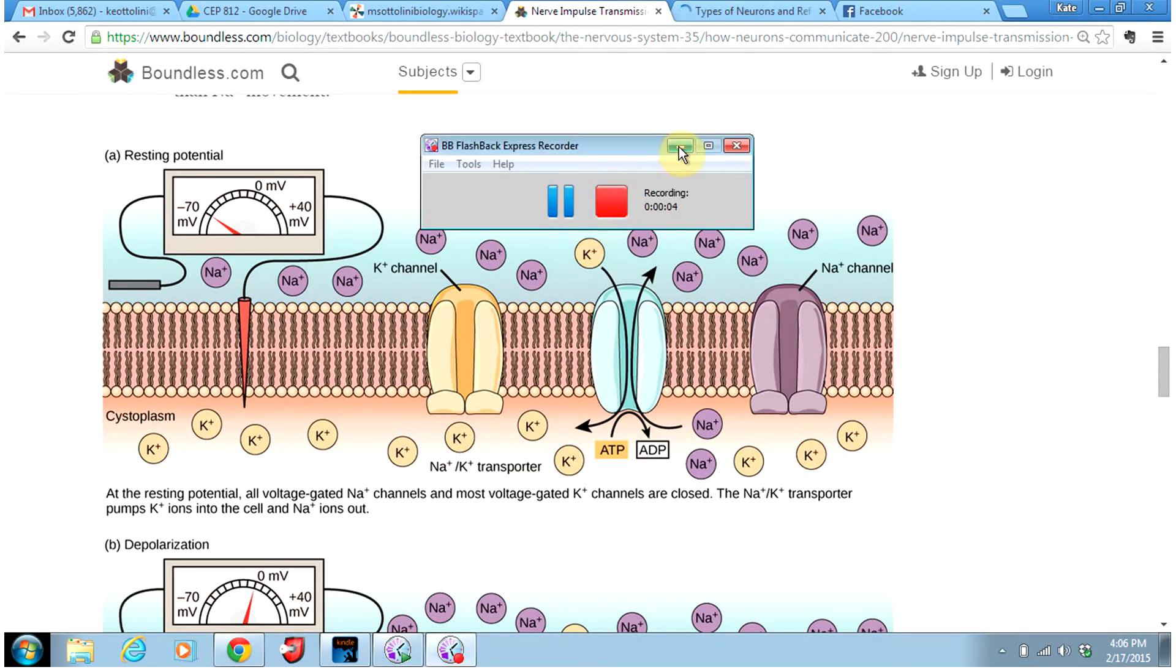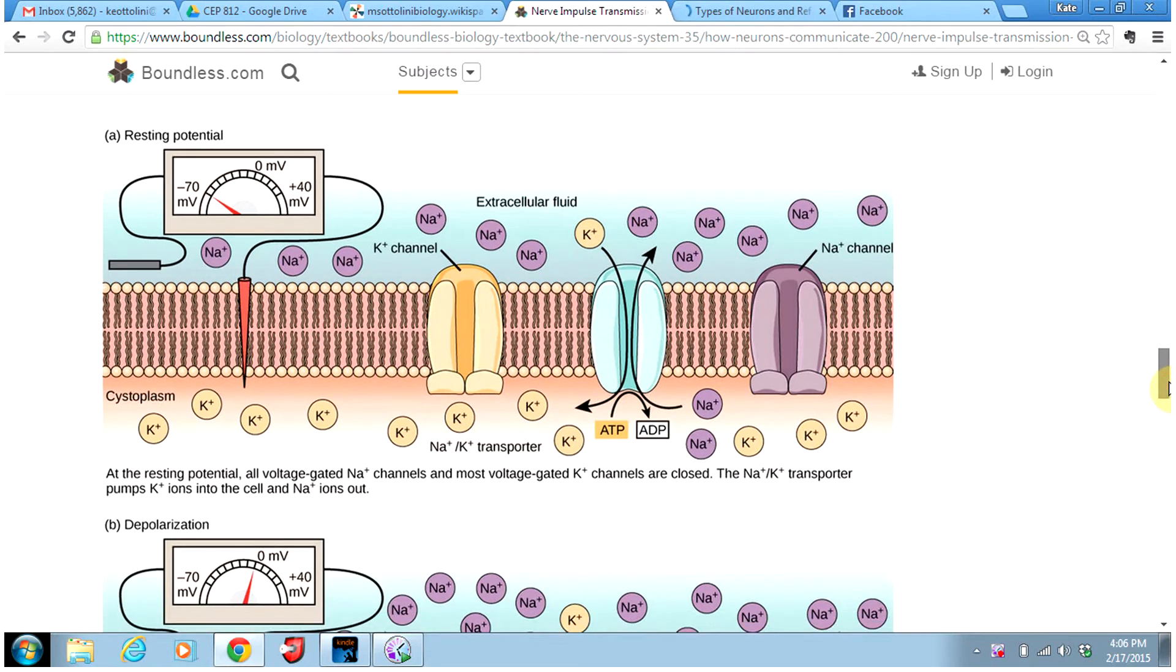Hey guys, it's Ms. Ottolini. In this video we are going to be talking about how nerve cells maintain what's called a resting potential, which is their normal charge across their membrane. The charge of the outside versus the charge of the inside of the nerve cell.